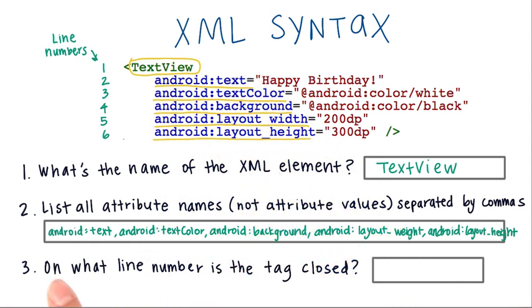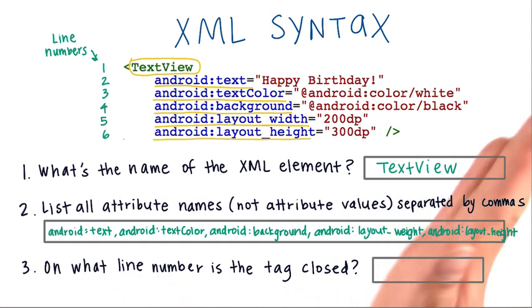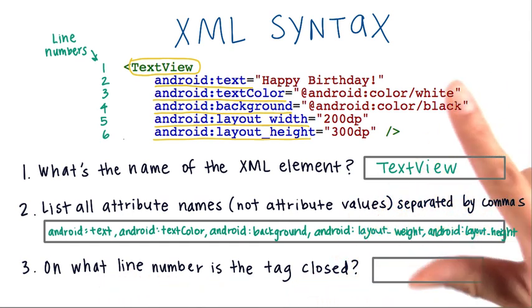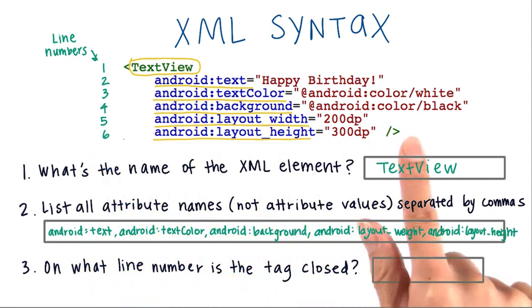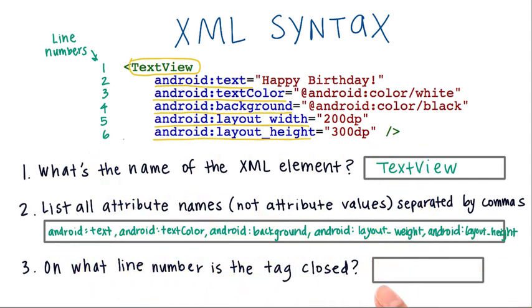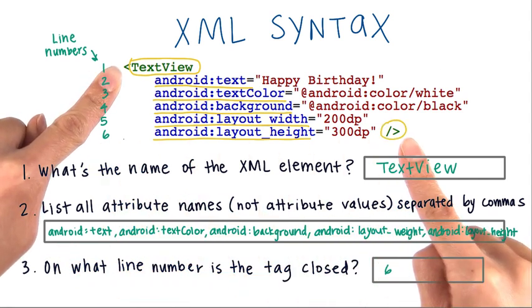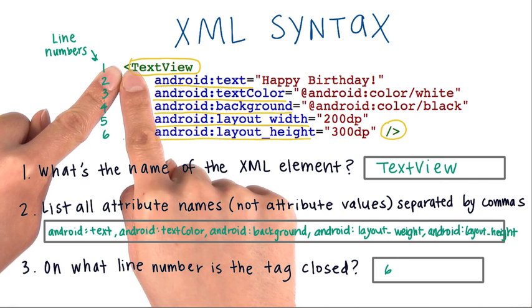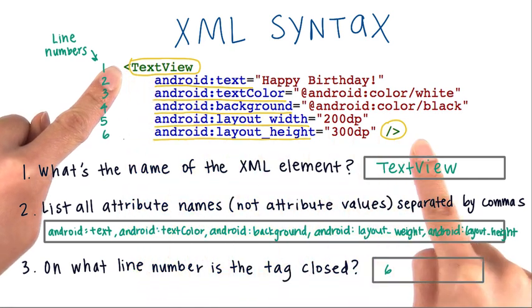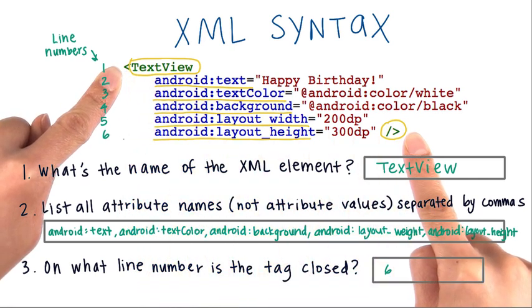The last question is: on what line number is the tag closed? We see the forward slash and the closing angle bracket on the last line, which is line six. This means it's a self-closing tag, because we open the text view tag and then close it right away.